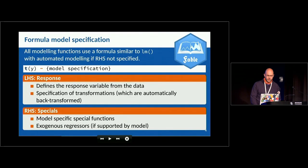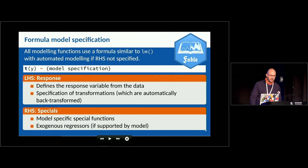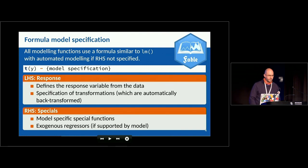All modeling functions will use a formula interface similar to LM or GAM. You will have a transformation of the Y variable — maybe a log or a Box-Cox transformation — and then a model specification on the right-hand side, which could be exogenous regressors or a specification for an ARIMA, ETS, or other model. Transformations will be handled seamlessly: if you fit a model to log data, FABL will do the back-transformation for you automatically.